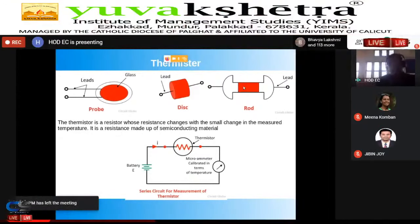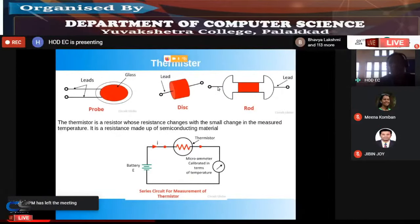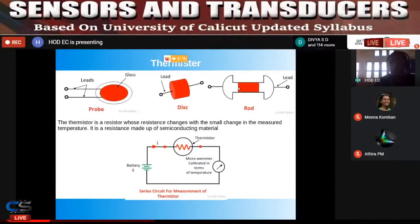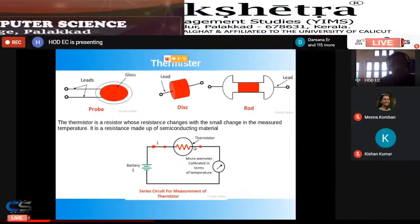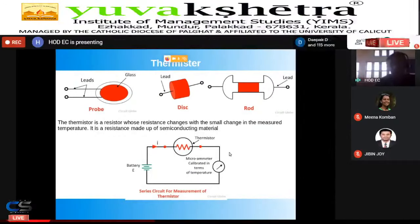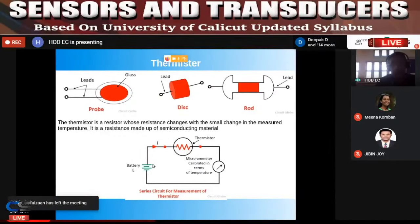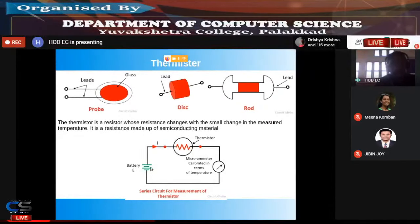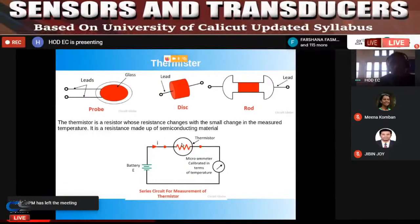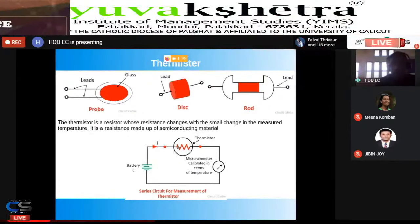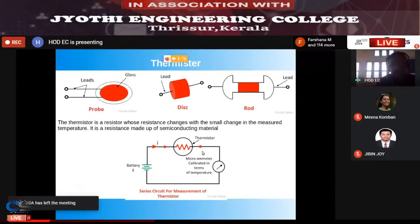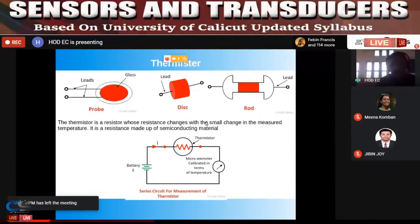A thermistor alone shows only resistance — before and after applying temperature it shows only resistance. But if you connect it into a circuit, the additional connections supply a fixed voltage and the resistance change causes a change in deflection current. Whenever temperature increases, the resistance either increases or decreases, causing the meter reading to change.